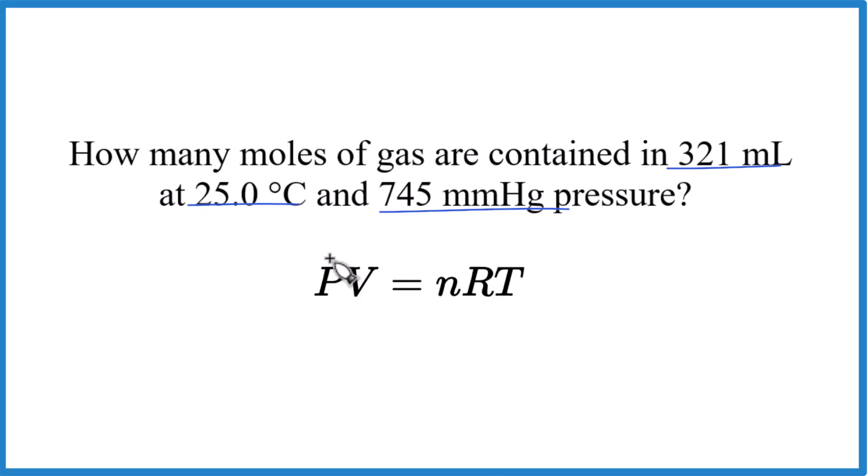What makes this problem a little annoying is we have a lot of different units that we're going to need to change around here to convert. For R, we're going to use this based on the pressure, but I don't really remember the value for R for millimeters of mercury. So I'm just going to convert this to atmospheres.